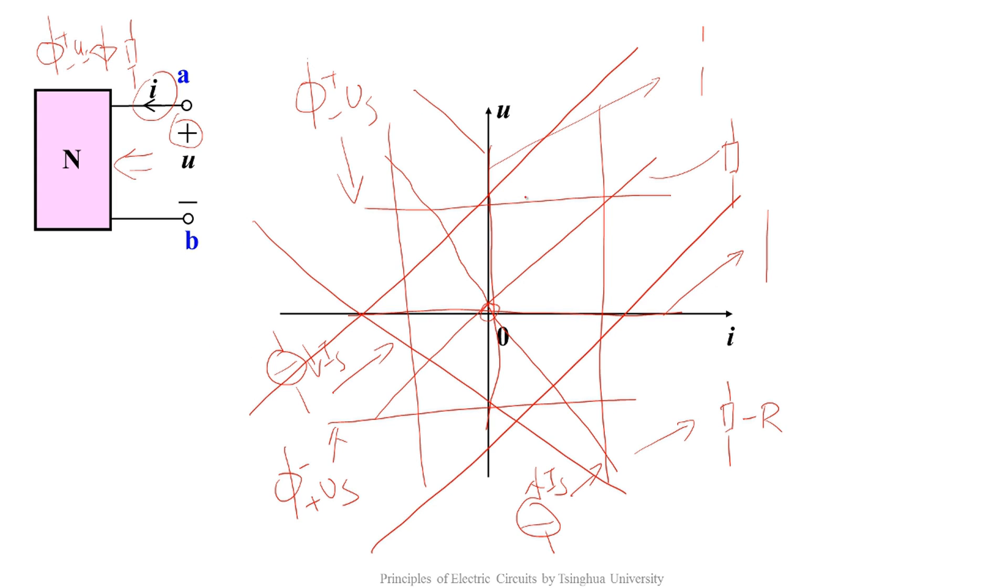These lines represent the common conditions of a complicated network, including independent sources and linear elements. What does this network look like? You should think about this before learning the Thevenin and Norton theorem.